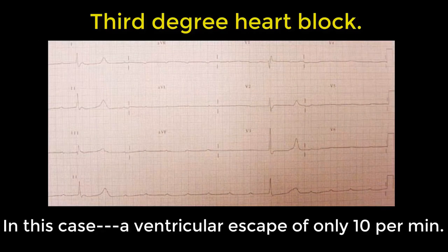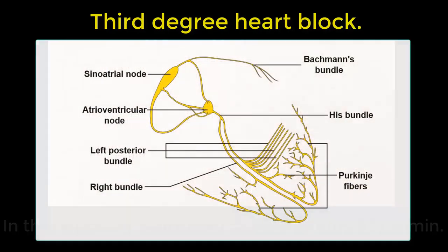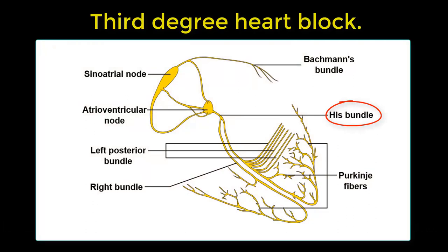The escape rhythm can be really slow — less than 30 beats per minute. In third degree heart block, if the ventricular escape is above the bundle of His, there's often a ventricular rate around 45 to 60 per minute and the escape QRS is nice and narrow. The patient is usually not hemodynamically compromised.